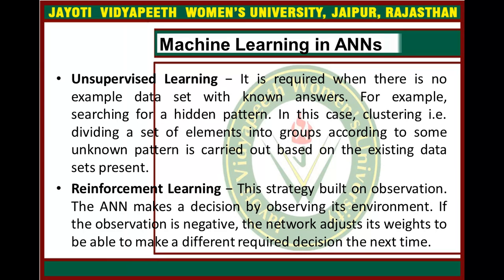The other type is Reinforcement Learning. This strategy is built on observation. The ANN makes a decision by observing its environment. If the observation is negative, the network adjusts its weights to be able to make a different, required decision the next time.